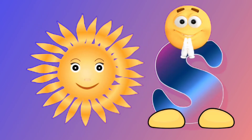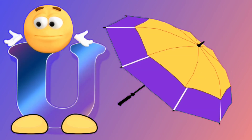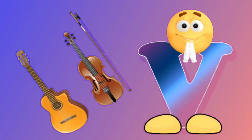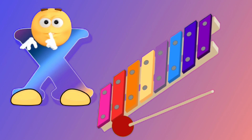S for sun, T for tomato, U for umbrella, V for violin, W for watermelon, X for xylophone.